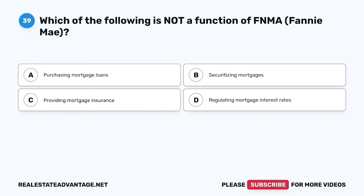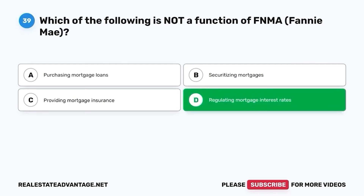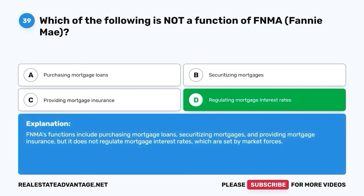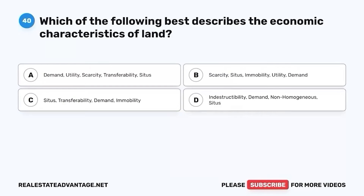Question 39. Which of the following is not a function of FNMA, Fannie Mae? A. Purchasing mortgage loans. B. Securitizing mortgages. C. Providing mortgage insurance. D. Regulating mortgage interest rates. The correct answer is D. Regulating mortgage interest rates. FNMA's functions include purchasing mortgage loans, securitizing mortgages, and providing mortgage insurance, but it does not regulate mortgage interest rates, which are set by market forces.